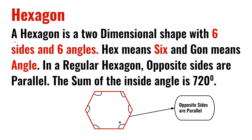A hexagon is a two-dimensional shape with six sides and six angles. Hexa means six and gon means angle. In a regular hexagon, opposite sides are parallel. The sum of the inside angles is 720 degrees.